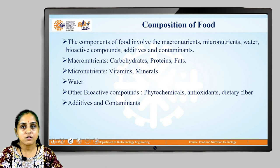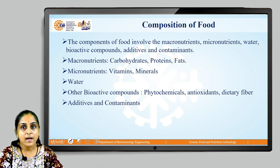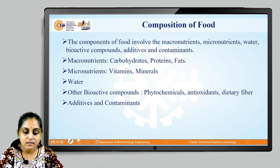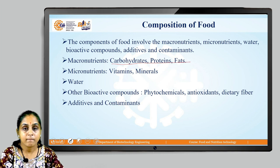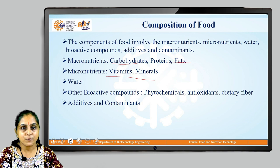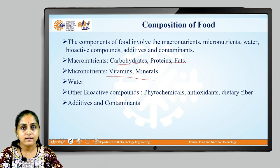Let us now understand the general composition of food. Food involves macronutrients, micronutrients, water, bioactive compounds, additives, and contaminants. Examples of macronutrients are carbohydrates, proteins, and fats, while examples of micronutrients are vitamins and minerals. Water is an integral part of food, and certain bioactive compounds such as antioxidants, dietary fibers, and phytochemicals are also present, along with additives and contaminants.